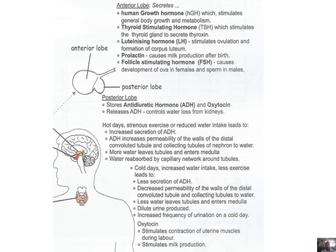There's not that many hormones, so it doesn't become too complex. We have growth hormone — try to remember what the other word for growth hormone is. It stimulates general body growth and metabolism; by body growth we're talking about bones and muscle. Then we have thyroid-stimulating hormone, which stimulates the thyroid gland to secrete thyroxin.